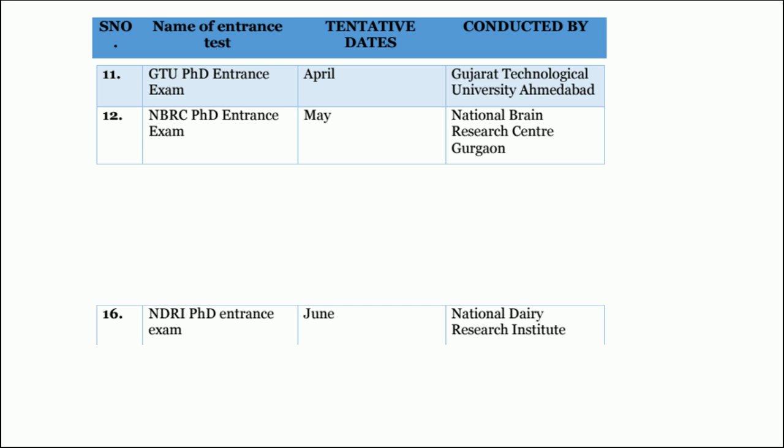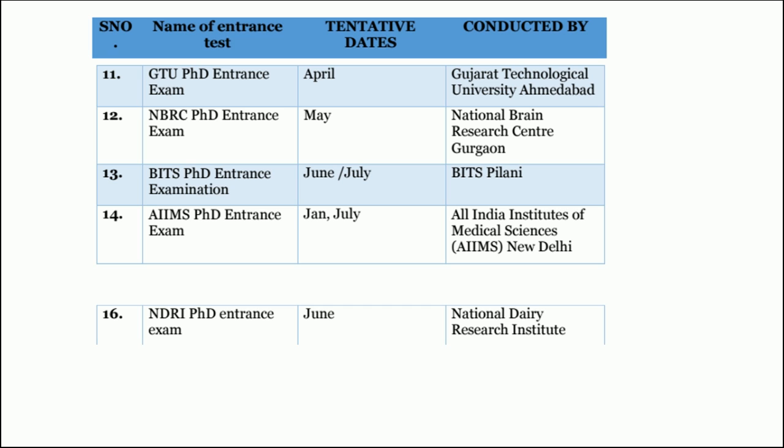NBRC PhD entrance exam, tentative month May, conducted by National Brain Research Center Gurgaon. BITS PhD entrance examination, tentative date June or July, conducted by BITS Pilani. AIIMS PhD entrance exams specially designed for conducting PhD in AIIMS, tentative dates are twice: January as well as in July, conducted by All India Institutes of Medical Sciences, AIIMS New Delhi.